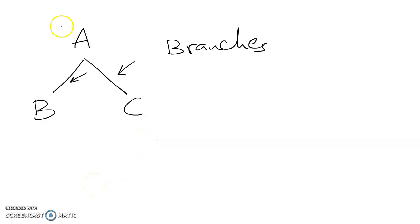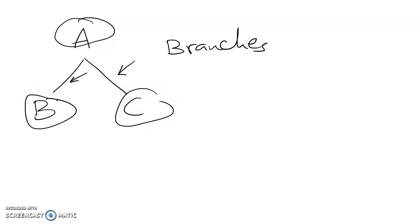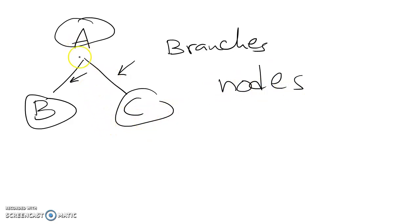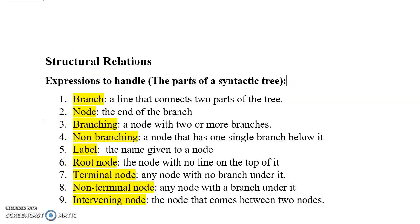Now, these names — A, B, C, and the other ones we may have — are called the nodes. So in this simple tree, we have three nodes: the first one is A node, then B node, then C node. A node is the end of the branch.